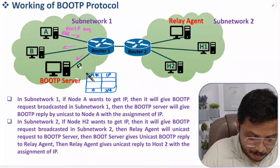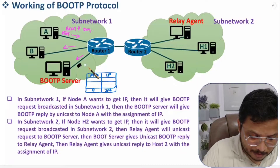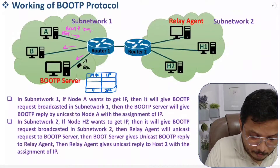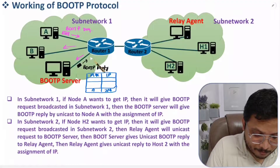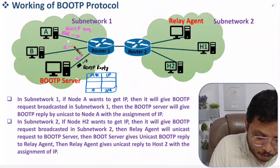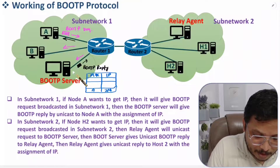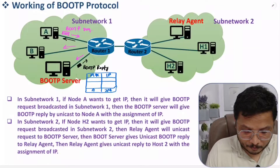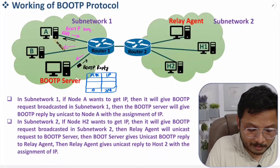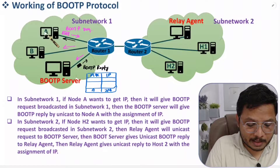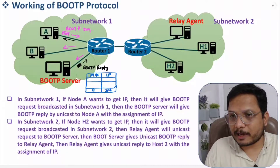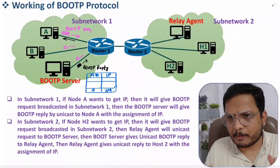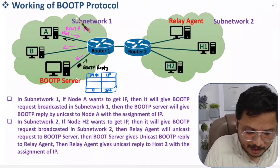The server forwards a unicast frame — a BOOTP reply — directly to Node A only. Now Node A will have an IP address, and based on that IP address, Node A can communicate in the entire computer network. This is how the basic working of BOOTP operates.